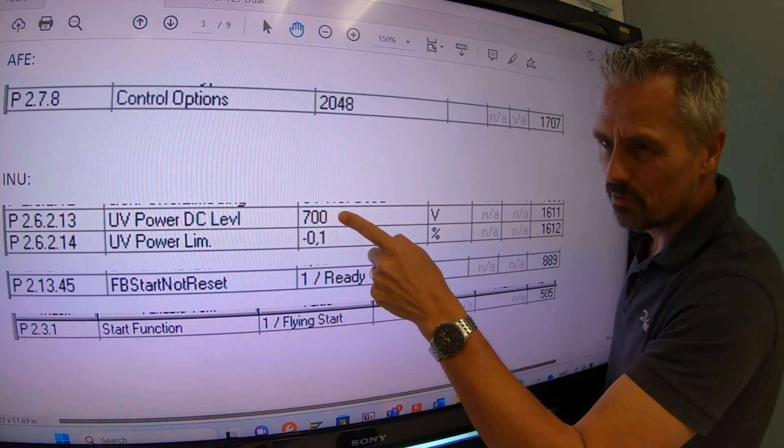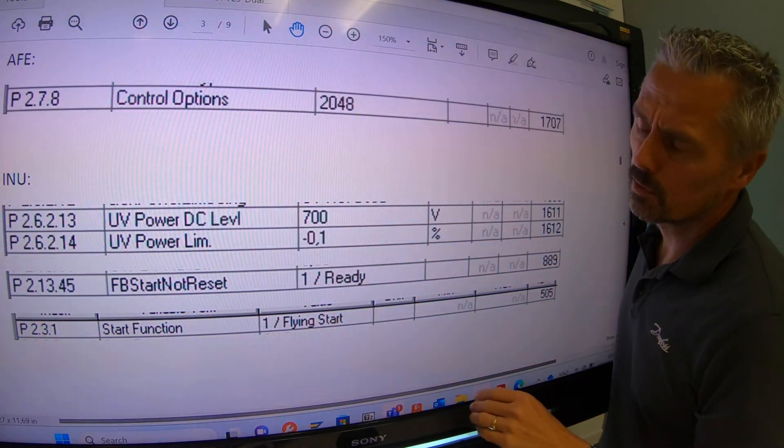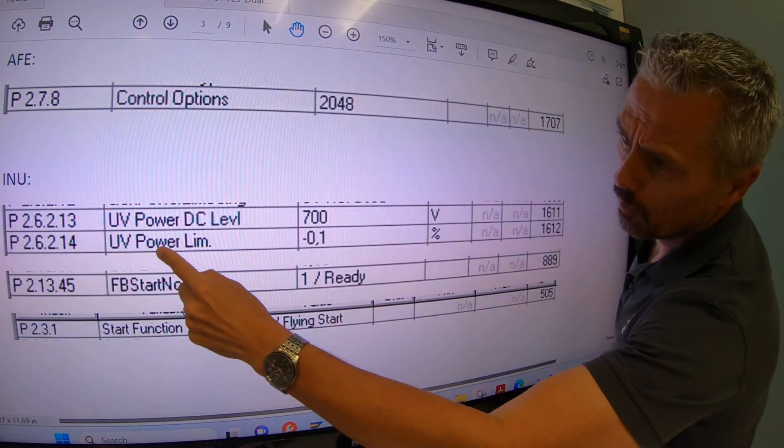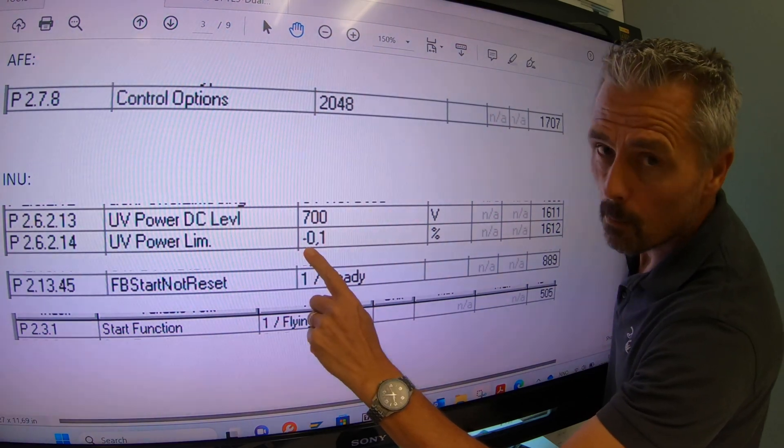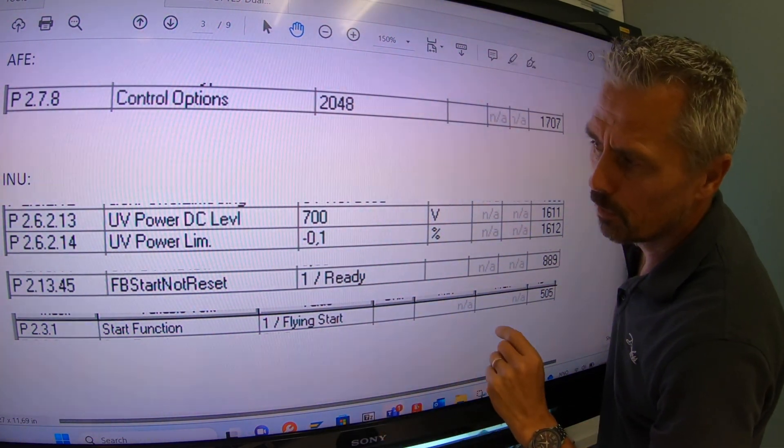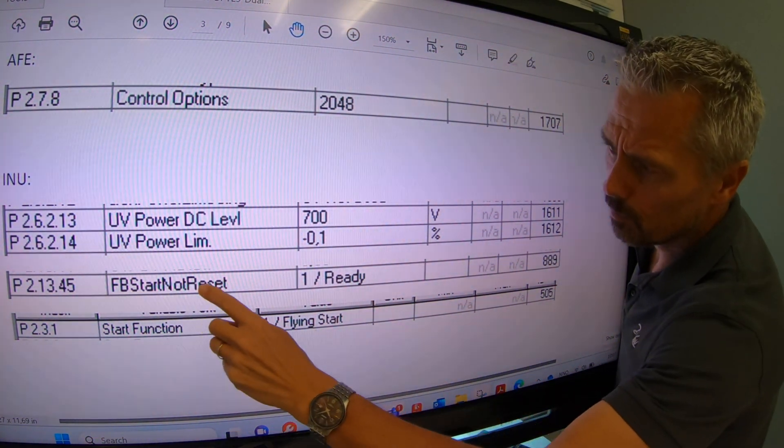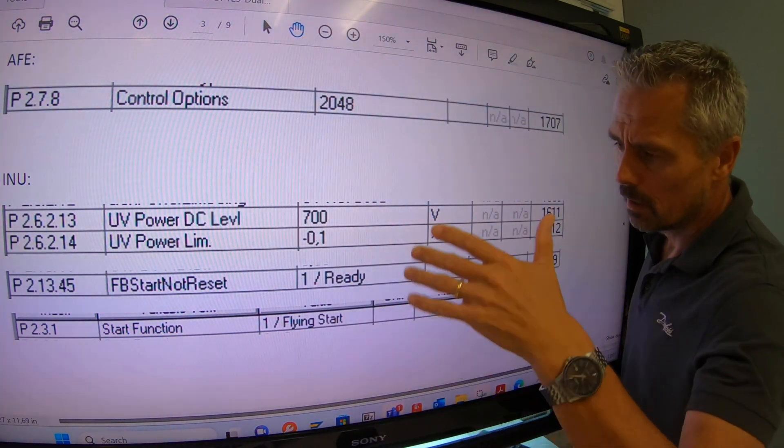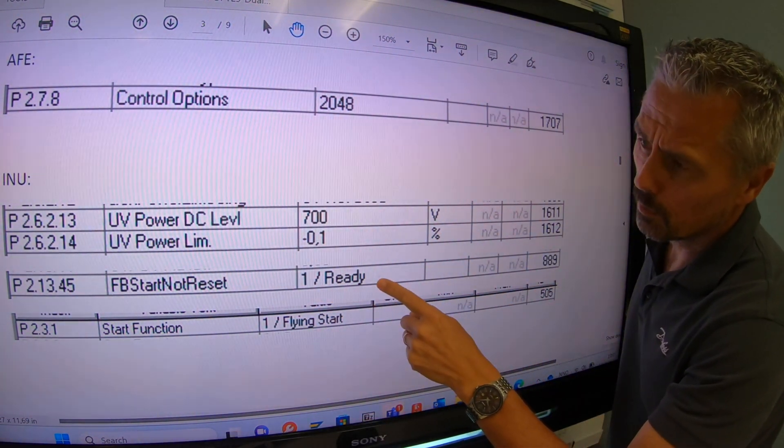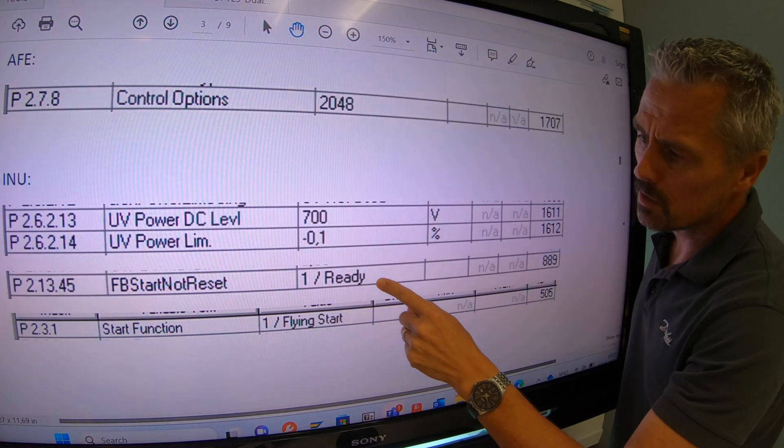In our testing, we are going to put it to 650 because then the curve is a little bit more clear. Activate it by your power limit. Set it to minus 0.1. Also the field bus startup, put it to 1 ready because then it will restart automatically.